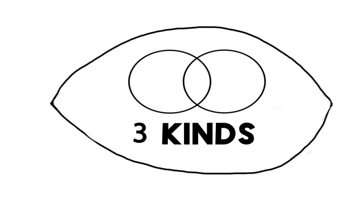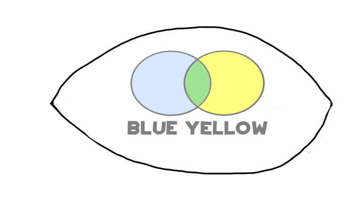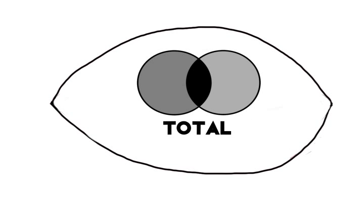There are three main kinds of color vision deficiencies: blue-yellow color blindness, red-green color blindness, and total color blindness, which results in a less frequent inability to see color.